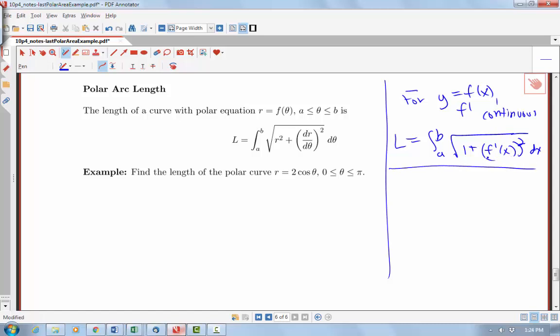When we had parametric equations, we noted that dy dx, or f prime of x here, would be equal to dy dt over dx dt. And notice that we could do some manipulation of this formula and get a formula then for the arc length in terms of parametric equations.